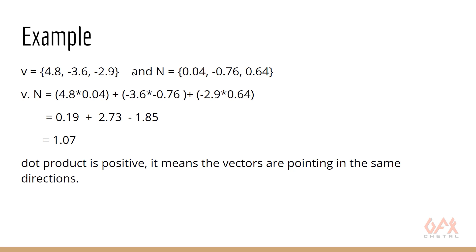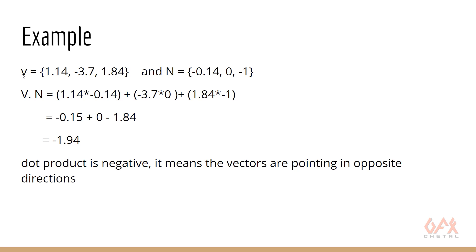For example, if we have velocity information (4.8, -3.6, 2.0) and normal information (0.04, -0.76, 0.64), the dot product is positive — meaning both vectors are pointing in the same direction. While if the velocity is (1.14, -3.7, 1.84) and the normal is (-0.140, 0, -1), the dot product is negative, indicating that velocity and normals point in opposite directions.